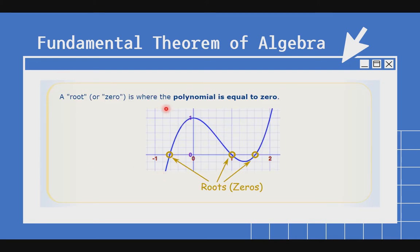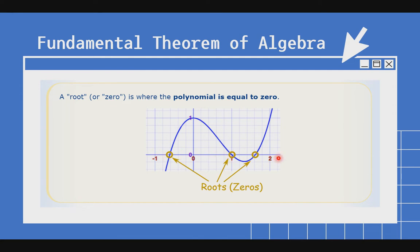A root or zero is where the polynomial is equal to 0. Kapag i-graph natin yung ating polynomial equation, pinipili natin ang iba't ibang value ng x. Sa mga point na kung saan ang equation natin ay nag-equal sa 0, or ang ating y ay nag-equal sa 0 — yun ang tinatawag nating zero. Or kapag i-graph natin siya, nakalapat siya sa x-axis.